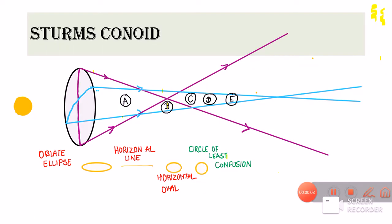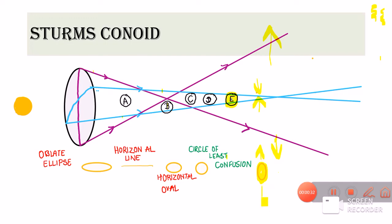Now let us see what happens if our retina is present at point E. At this point, the convergence and divergence have both increased — the horizontal meridian is coming closer together, but the vertical meridian is diverging. So what we get now is a vertical oval, because the vertical meridian is diverging and the horizontal meridian is converging.